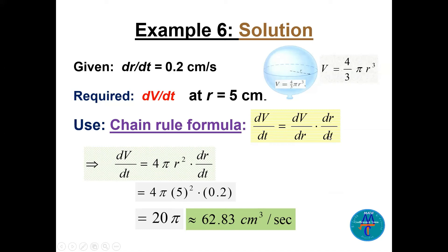Differentiating V = (4/3)πr³ gives dV/dr = 4πr². So dV/dt = 4πr² times 0.2. At r = 5: dV/dt = 4π(25)(0.2) = 20π ≈ 62.83 cm³ per second.